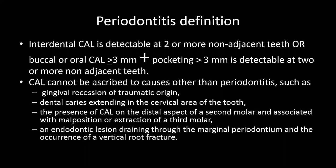Using the BSP flowchart, you can describe the spread of lesions in the mouth — localized, generalized, or incisor-molar distribution — ascribe a stage (1, 2, or 3), a grade (A, B, or C) based on how rapidly it's moving, and based on bleeding and general risk factors, decide whether it's stable, in remission, or unstable and raging and needing treatment.